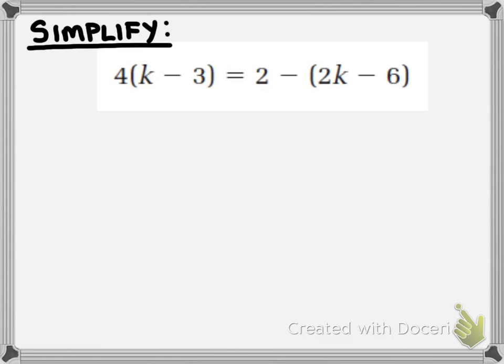So this four — remember that bracket — the bracket means that the four outside the bracket goes to everything inside. What is the operation we're going to use when we distribute the four to the k and the negative three? What operation, Megan? Multiplication.